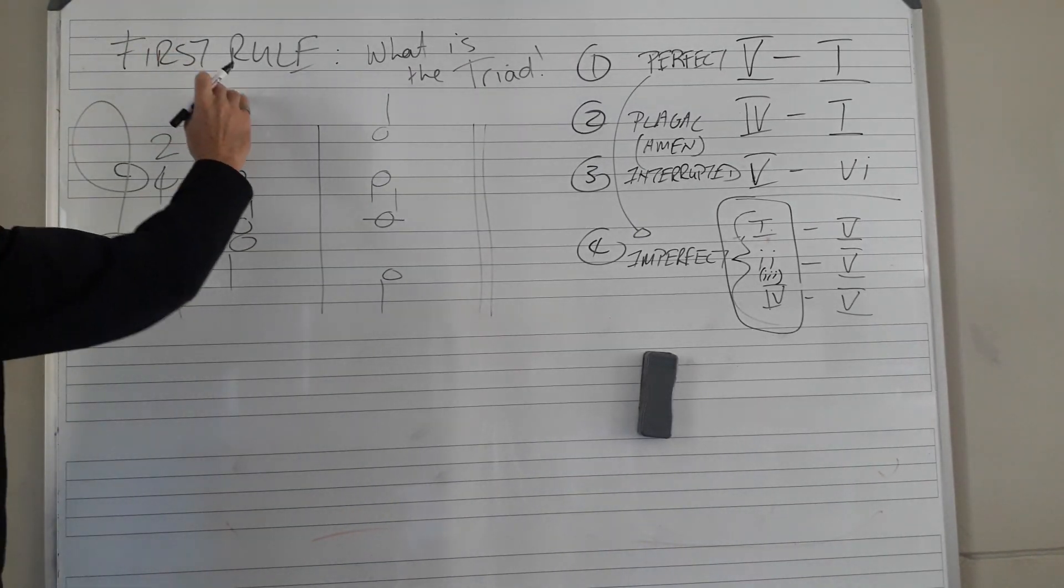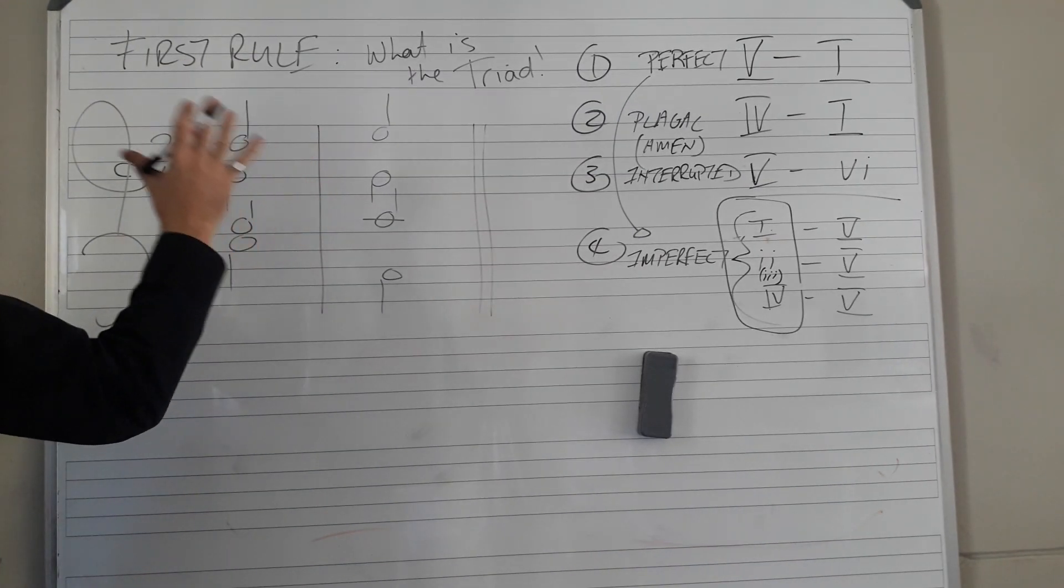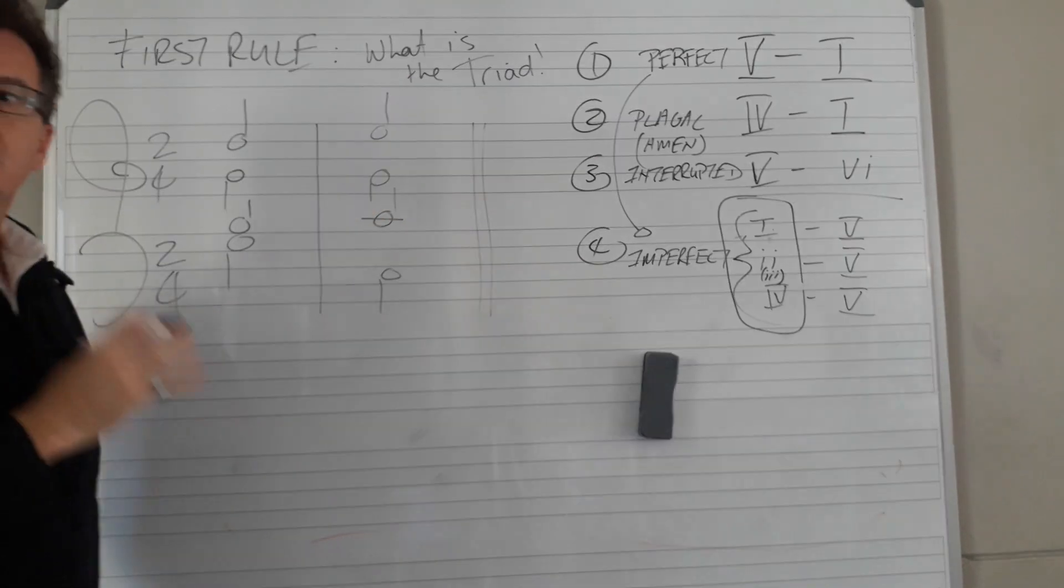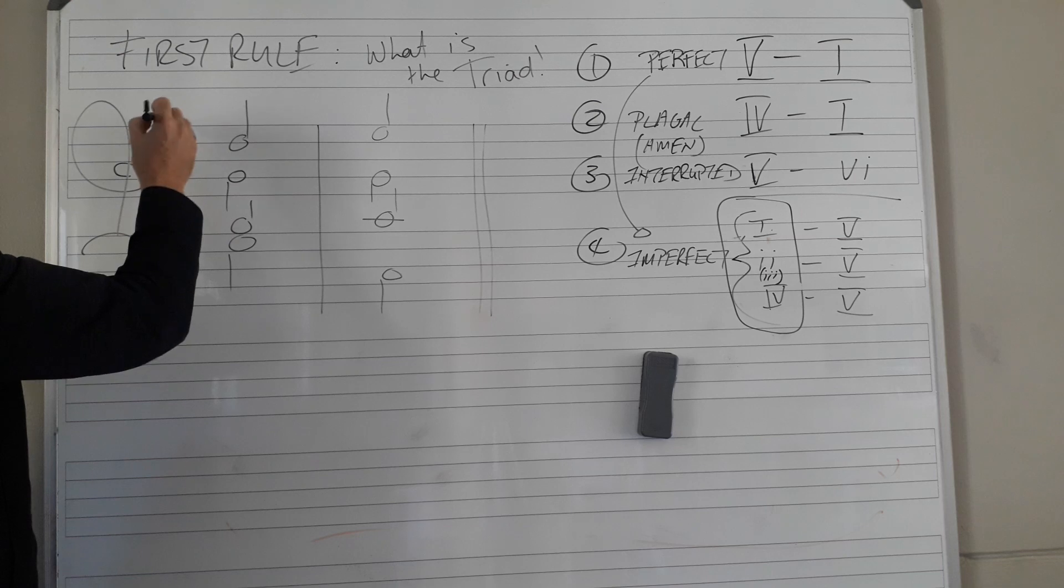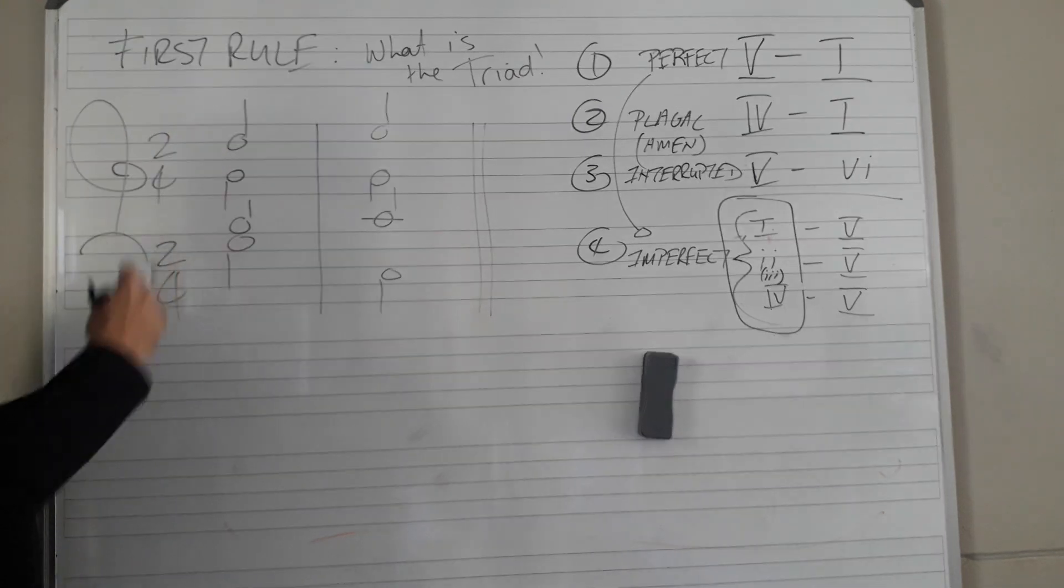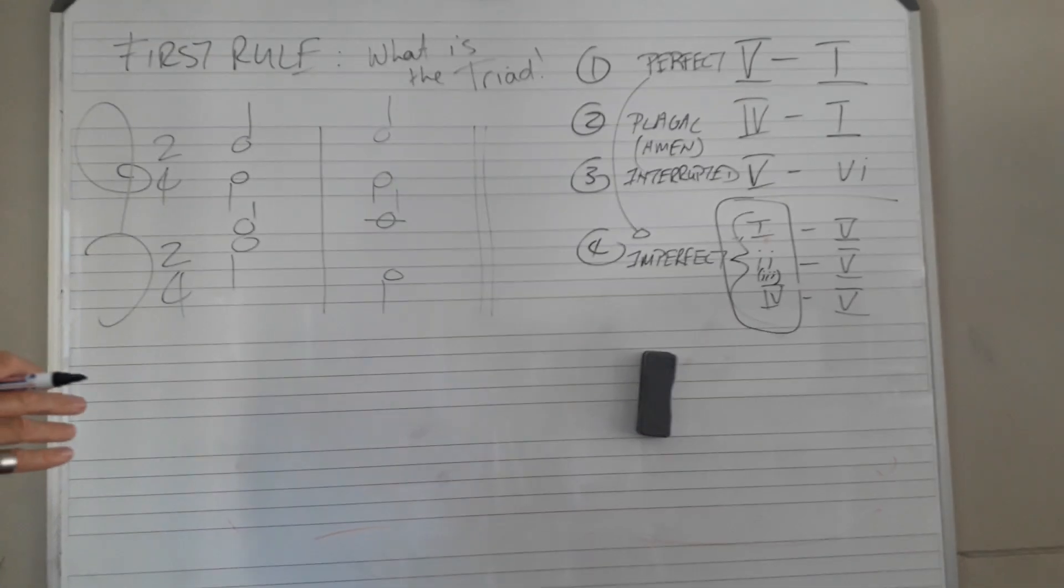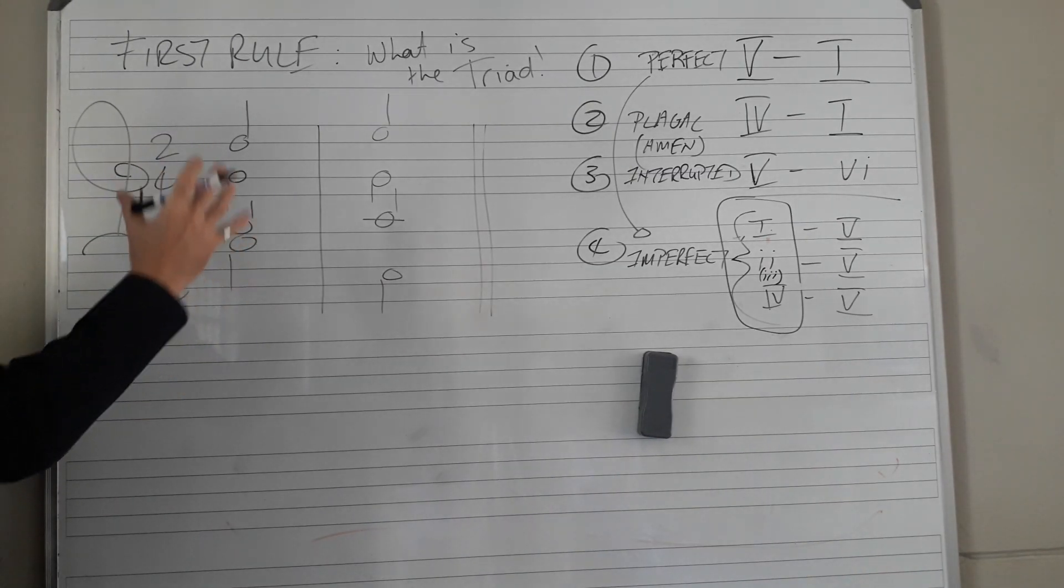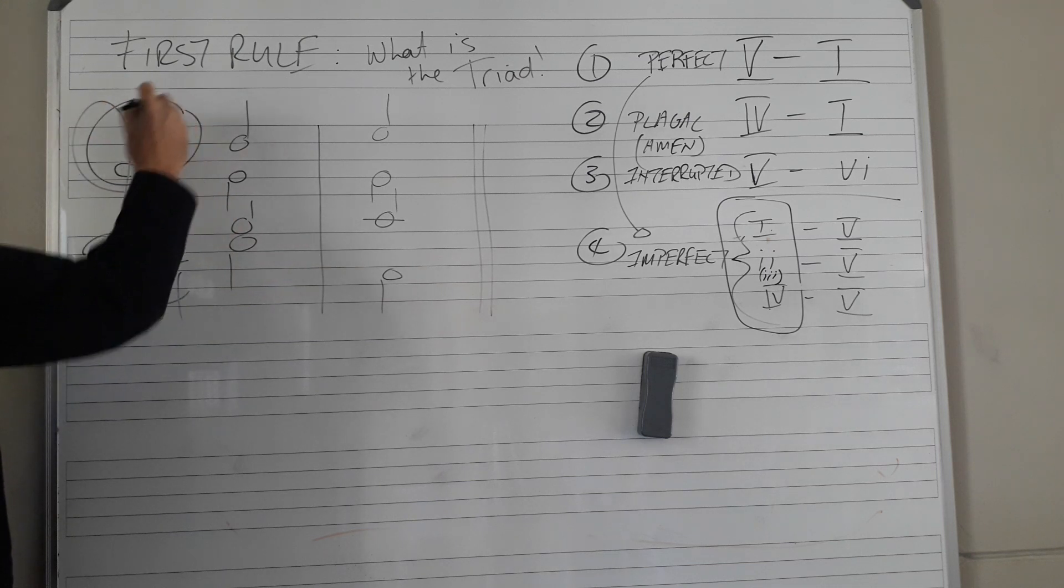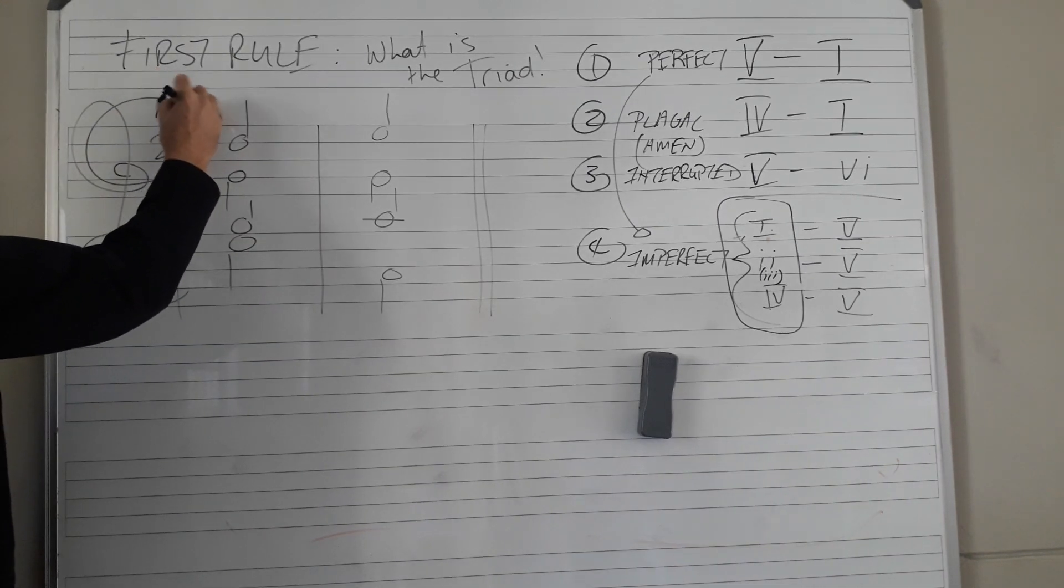Moving to the next part here, the first rule of analyzing something in four part is going back to the triad. What is the triad? You got that? Okay, first I want to show you something.